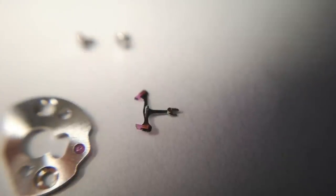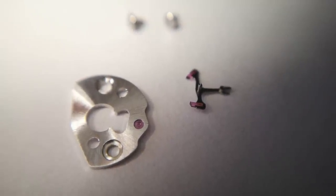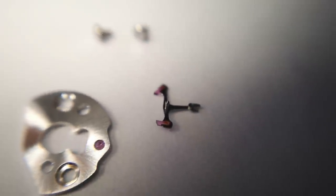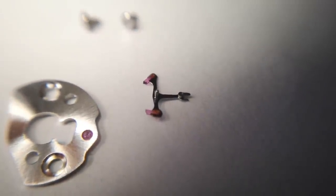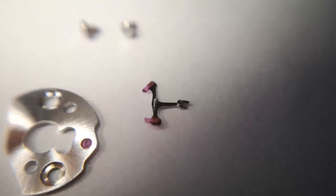Here is the pallet fork and the pallet fork bridge there with the single jewel that you can see and its two retaining screws. Now this is really a very small component, and the pivot there on the top is really very delicate.